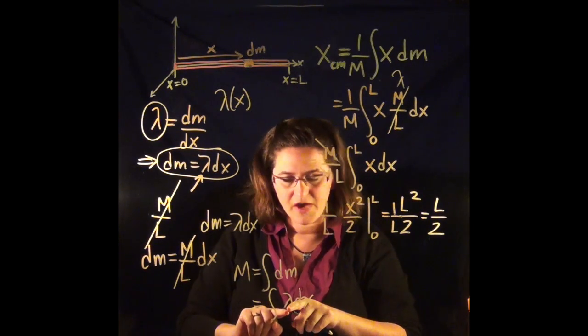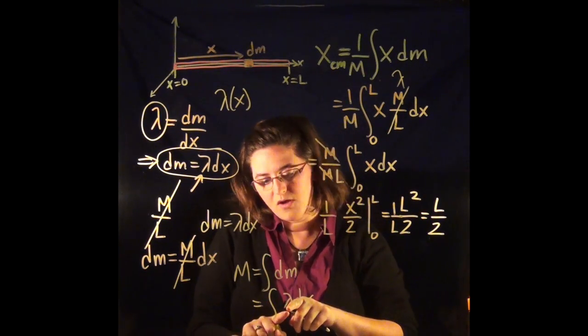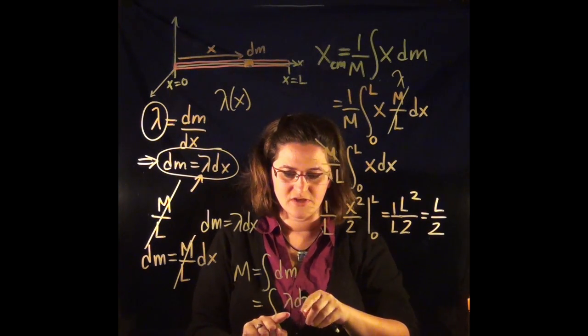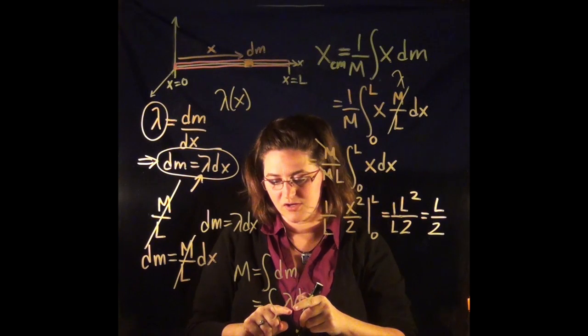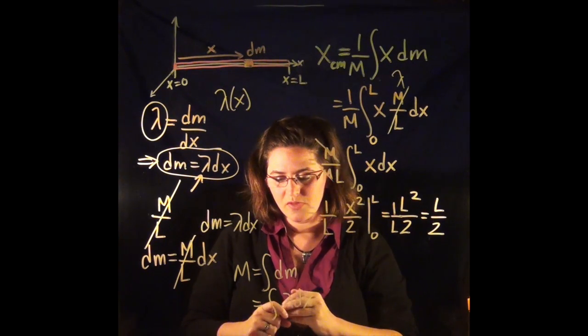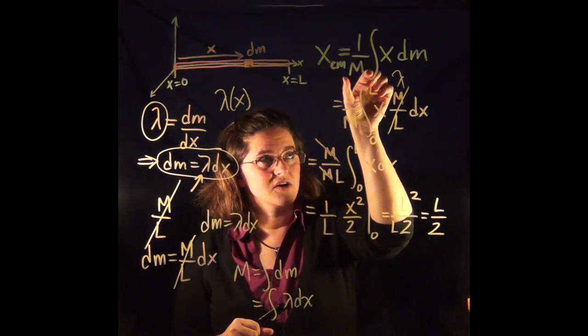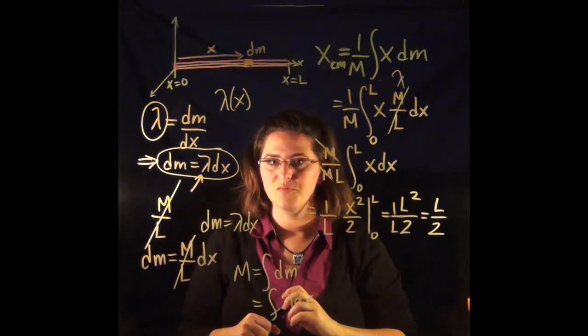So see how, now if I have a function of lambda, I could leave that inside the integral to be integrated. If I'm given a constant lambda, then I can take it out of the integral. And now I can find the total mass, the part that goes in here, if I'm not given the total mass of the problem.